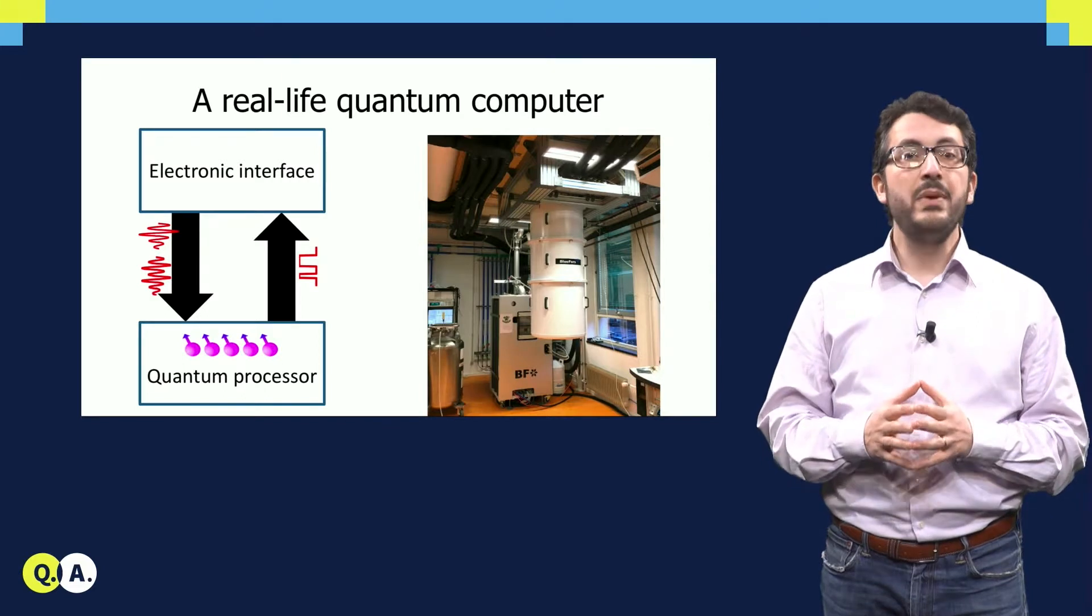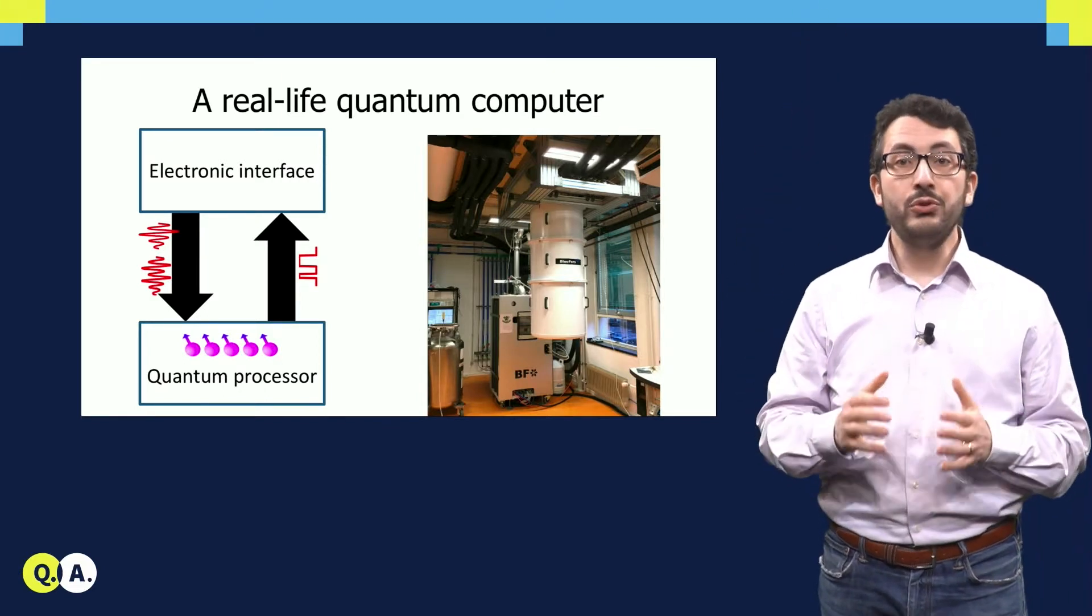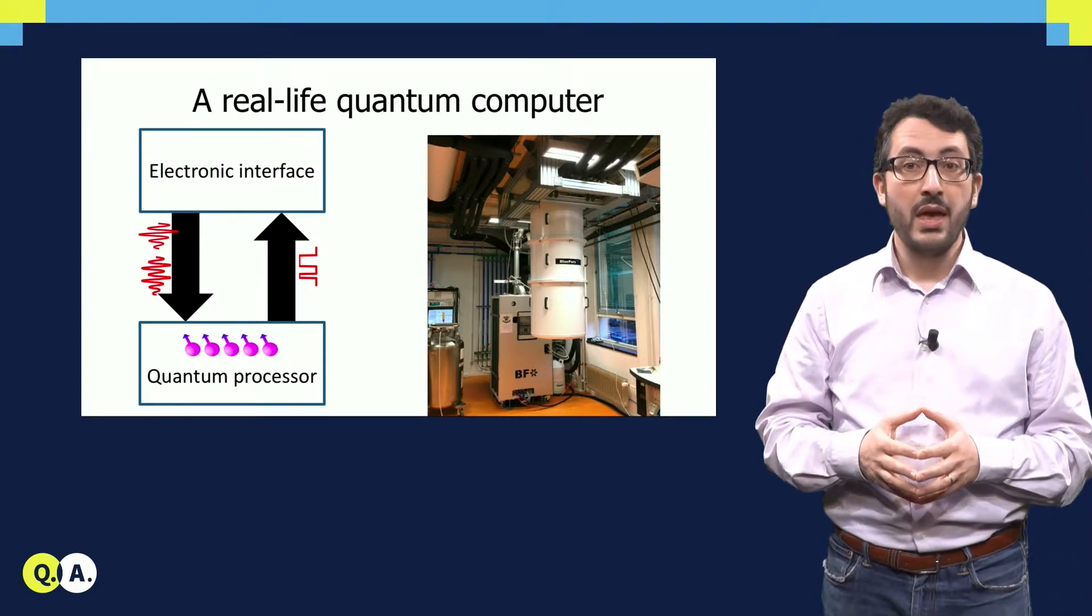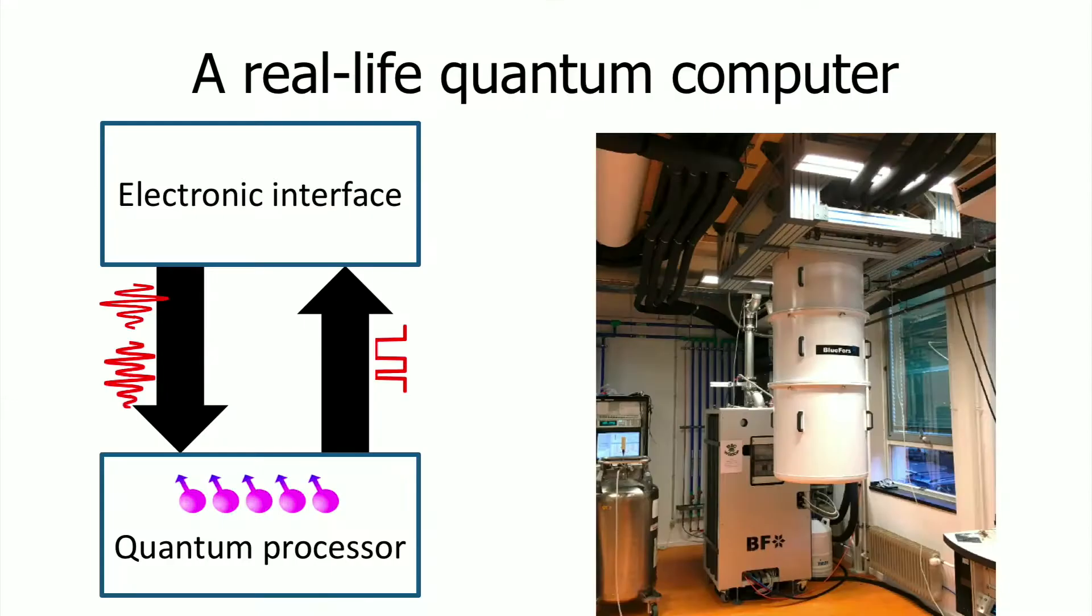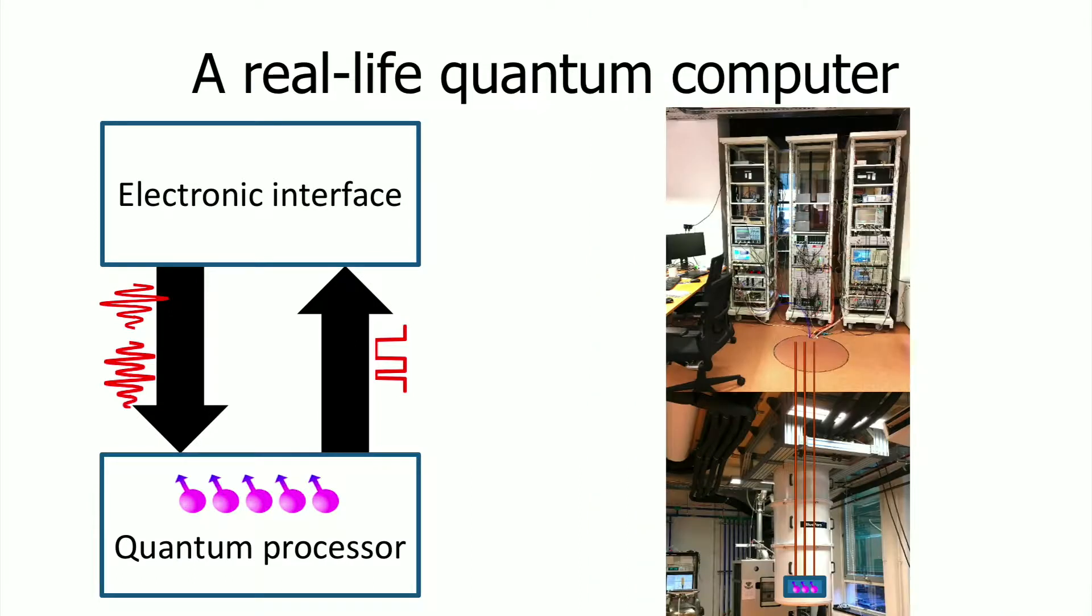We have a big refrigerator, this big cylinder hanging from the ceiling, 2 meters tall. This is used to cool down the quantum processor very close to absolute zero, because that is the temperature where the qubits work best. The quantum processor is here at the bottom of the fridge. And to find the electronic interface, we should follow the wires that go through the fridge to the top floor and finally reach the electronic equipment on the higher floor, which implements the electronic interface.